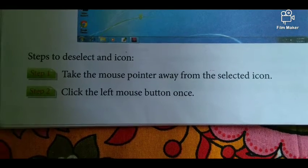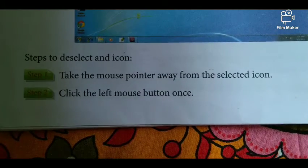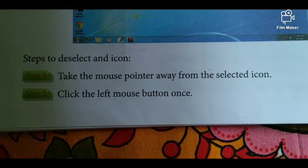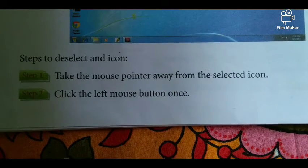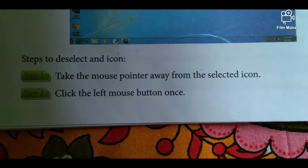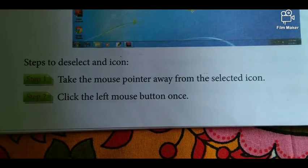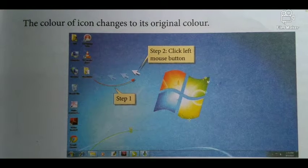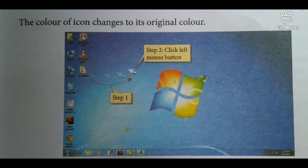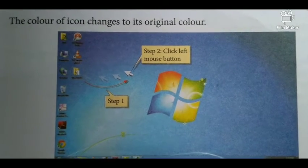Steps to deselect an icon: Step 1 - Take the mouse pointer away from the selected icon. Step 2 - Click the left mouse button once. The color of the icon changes to its original color.